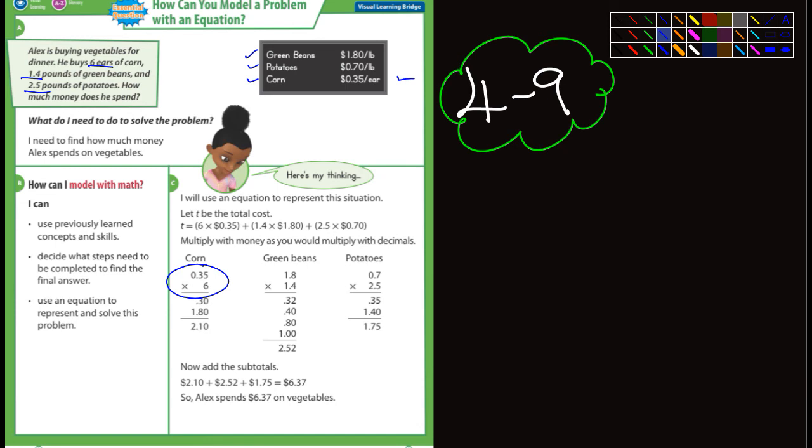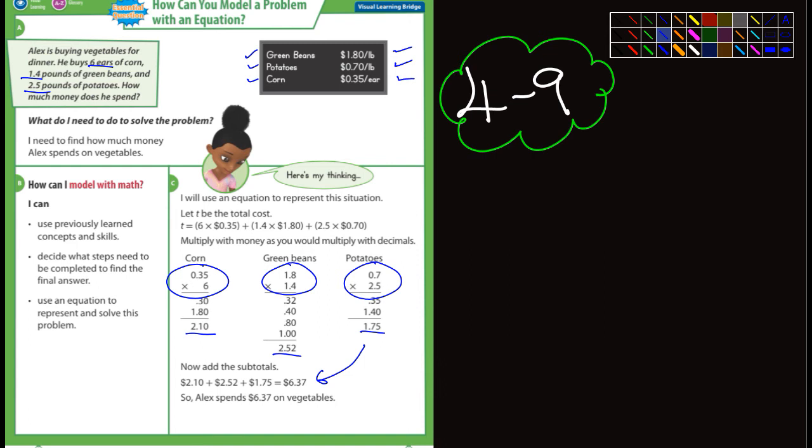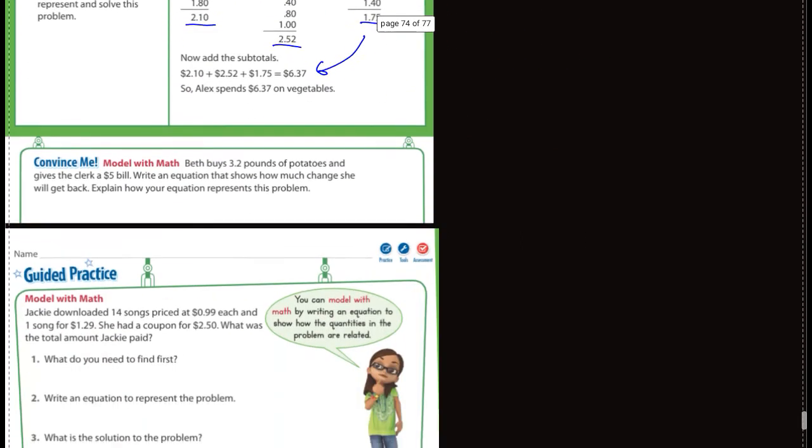He buys six ears of corn at 35 cents each, so they've modeled that as six times 0.35. Then 1.4 pounds of green beans at $1.80, and 2.5 pounds of potatoes at 70 cents a pound. They multiply those and total each one, then add together those totals to get $6.37. I think that's something you guys could have done without too much difficulty.